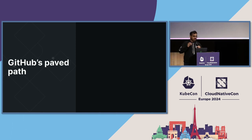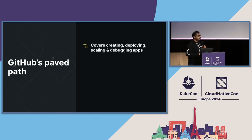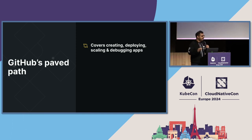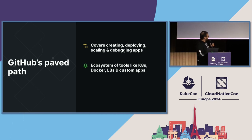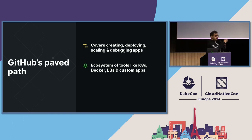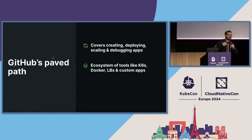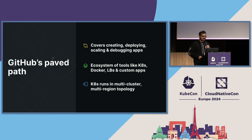GitHub's main paved path covers everything needed for running software: creating, deploying, scaling, and debugging applications and microservices. It is more of an ecosystem of tools which includes Kubernetes, Docker, load balancers, and a lot of custom apps, so that a more cohesive experience can be provided for engineers. Don't be mistaken when I say it's a paved path — it's not just infrastructure or just Kubernetes. Kubernetes is our base layer, and the paved path is really a mix of conventions, tools, and configuration settings and processes built on top of that. It runs in a multi-cluster and multi-region topology.